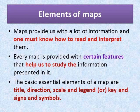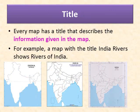Let us learn about each element one by one. Title: every map has a title that describes the information given in the map. From the title itself, you can find out what information is given in it. For example, a map with the title 'India Rivers' shows the rivers of India. A political map or an outline map will show the outline of a particular place.